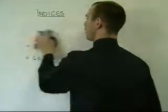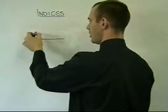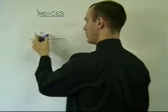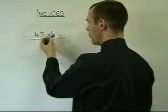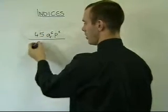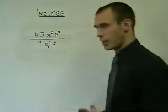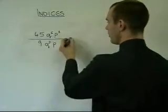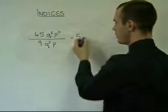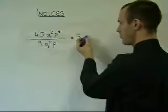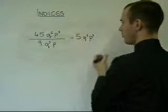Division questions are often written differently, where there is a line going through instead of a division sign. And we can have a question such as 45q to the 6 p to the 3, divide by 9q to the 3p. This is a more complicated question, but we break it down the same way. 45 divided by 9 is 5. q to the power of 6 divided by q to the power of 3 is q to the 6 take away 3. p to the 3 divided by p can be p squared. That's your answer.